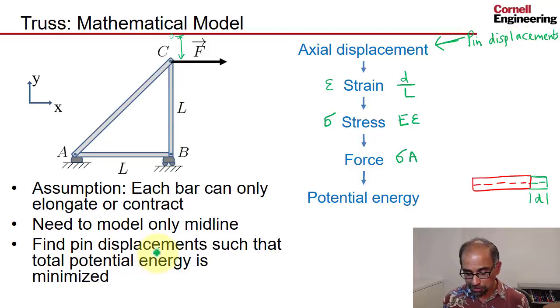And I want to find the pin displacement such that the total potential energy of the truss is minimized, because at equilibrium the total potential energy is minimized.